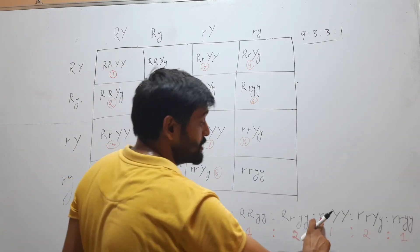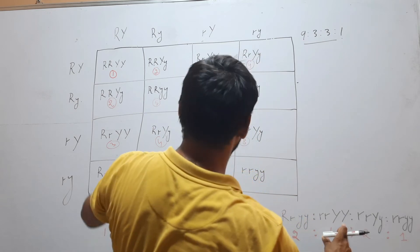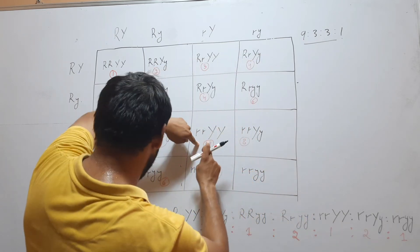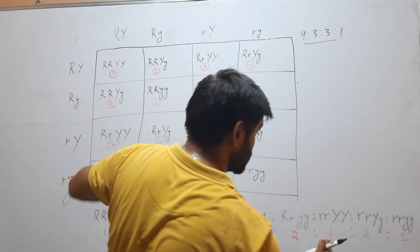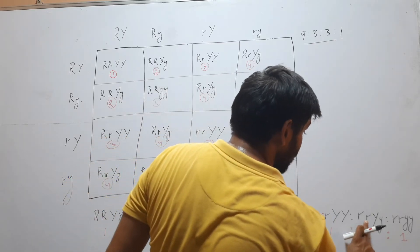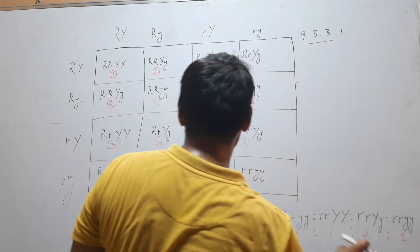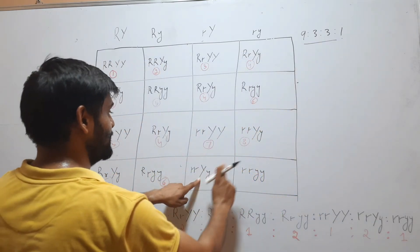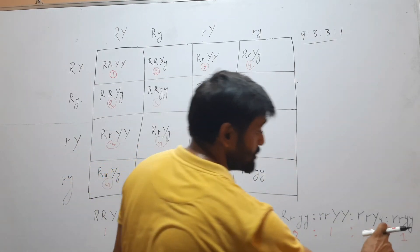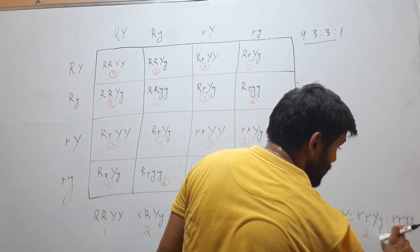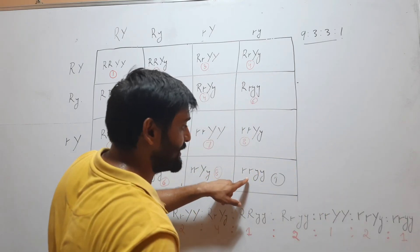Next is rrYY. It comes there and it is coming only 1 time, so we will write 1. Next is rrYy. This one is this one and this one, so we will write 2. Next is rryy. This comes only 1 time. So we will write 1.